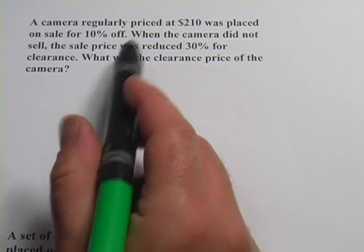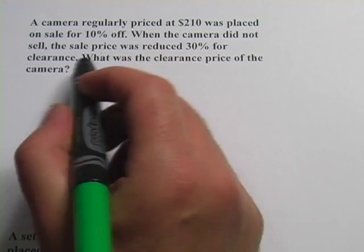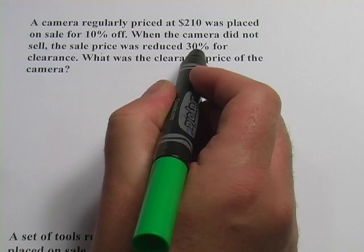So what you want to do here is do these in two steps. First take the 10% off, figure out what the answer is, then take the 30% off that.